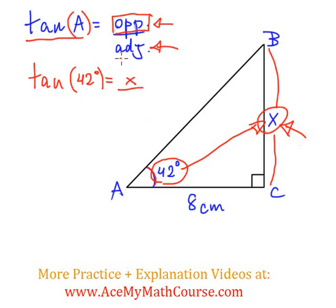And we have that over the adjacent. What is the adjacent side to this angle? The adjacent side is the small side right beside the angle. In this case, it measures 8 centimeters.